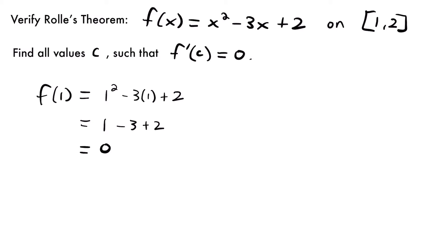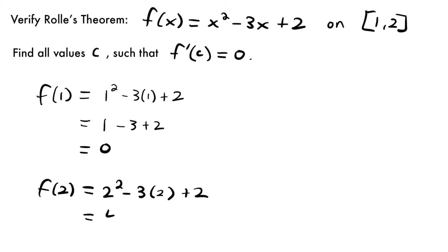If the two values are different, Rolle's Theorem does not apply. So we have f of 2 equals 2 squared minus 3 times 2 plus 2, which equals 4 minus 6 plus 2, which equals 0. So this checks out. Rolle's Theorem is going to apply here because these two points on this function have the same height, the same y value — that is very important for Rolle's Theorem.